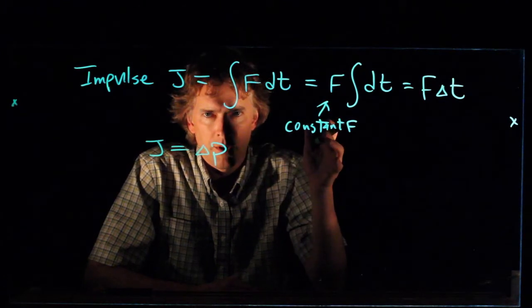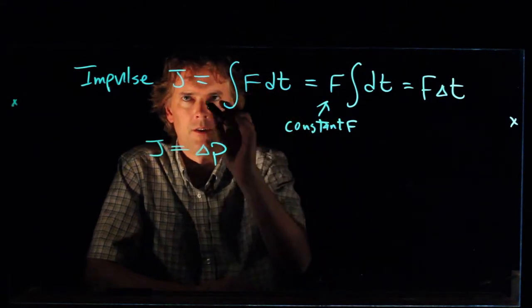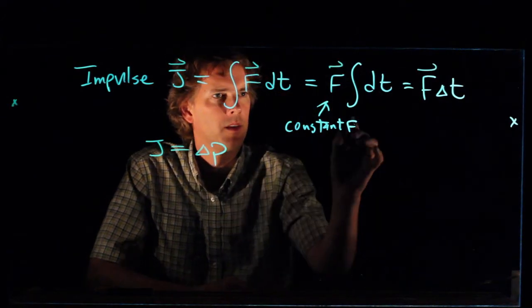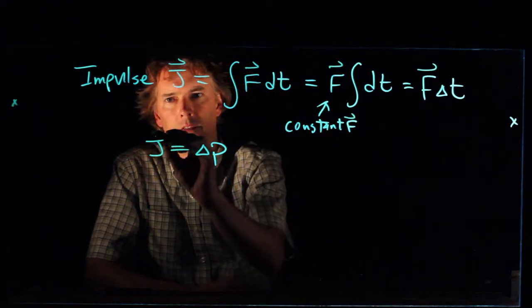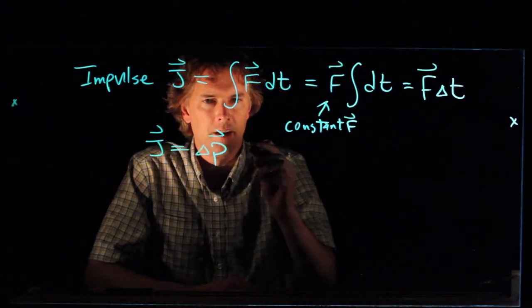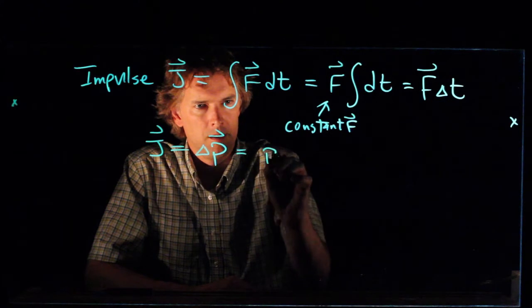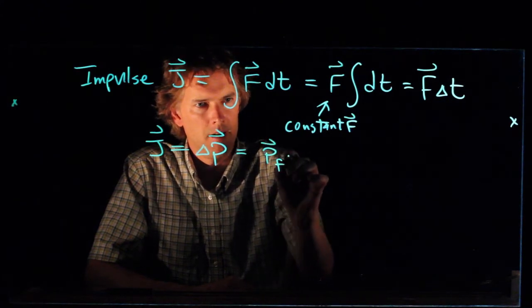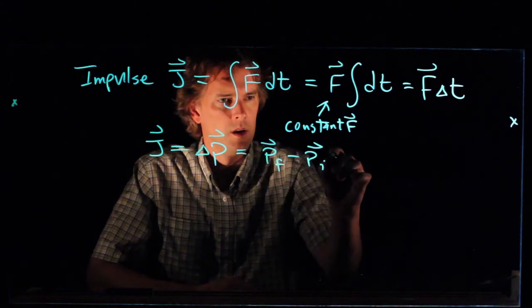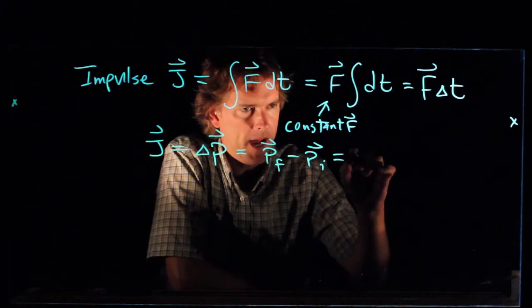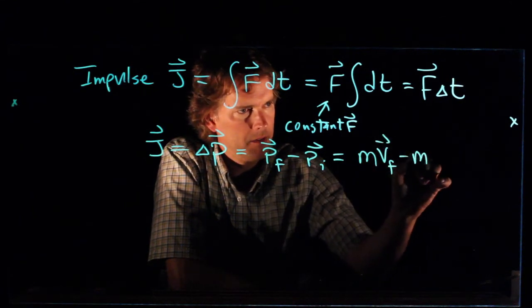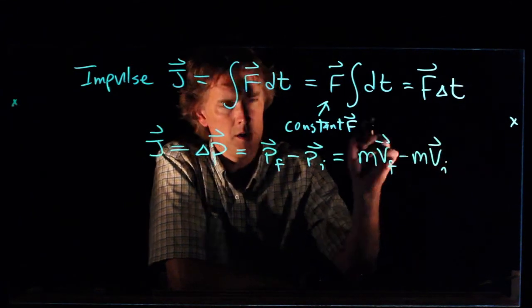Now, one good thing to remember in all this is these are really vector equations. Impulse has a direction, force has a direction. And so we should really be talking about the change in momentum as a vector. Delta p is just p final minus p initial.